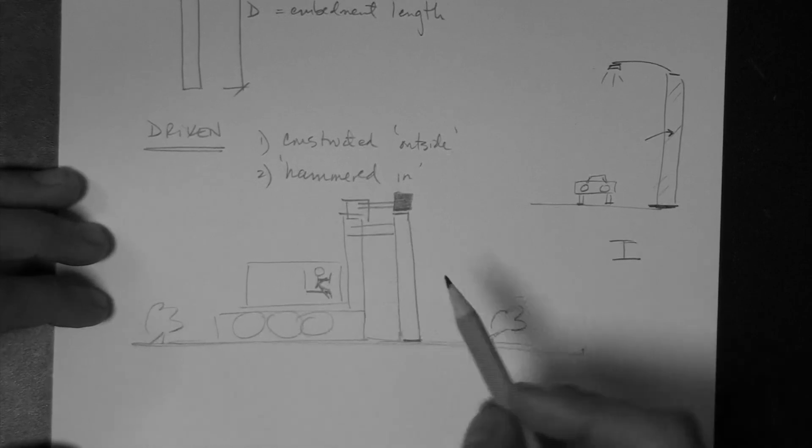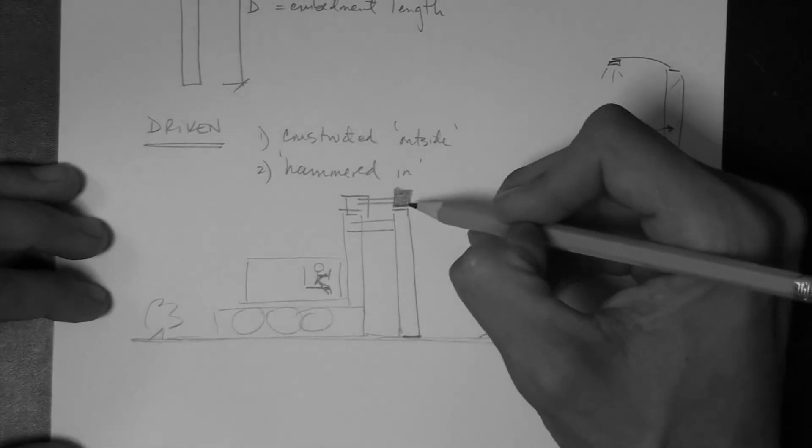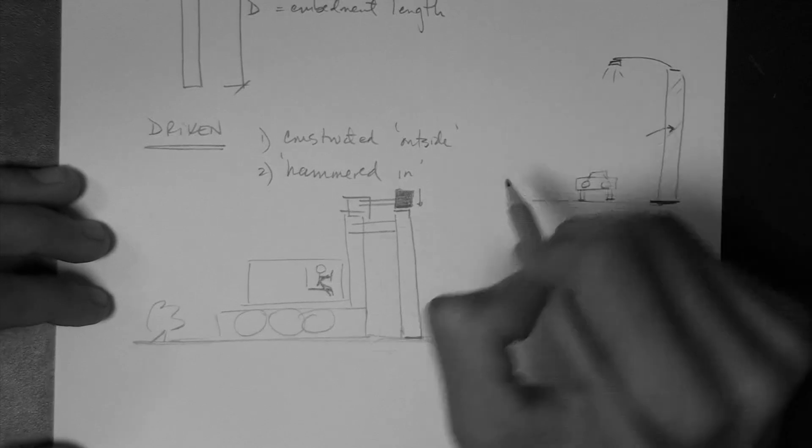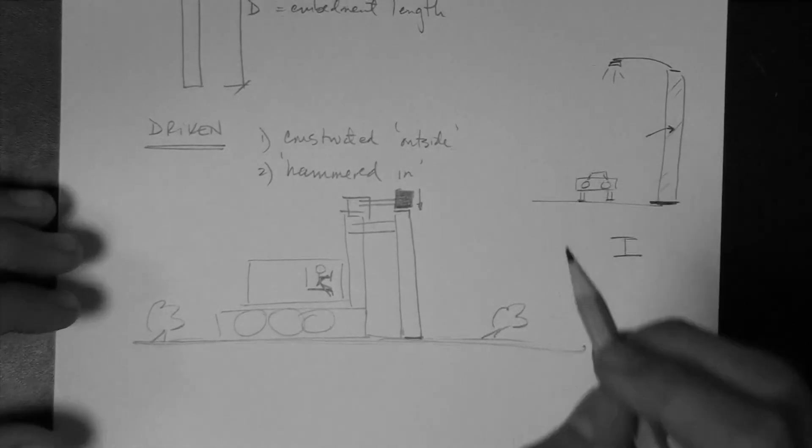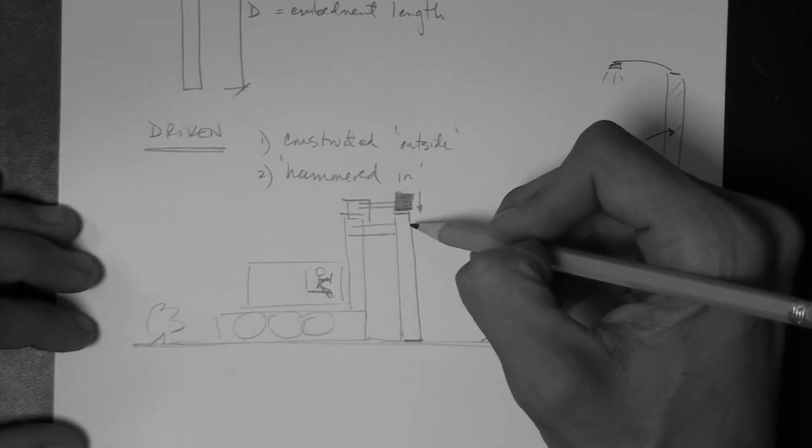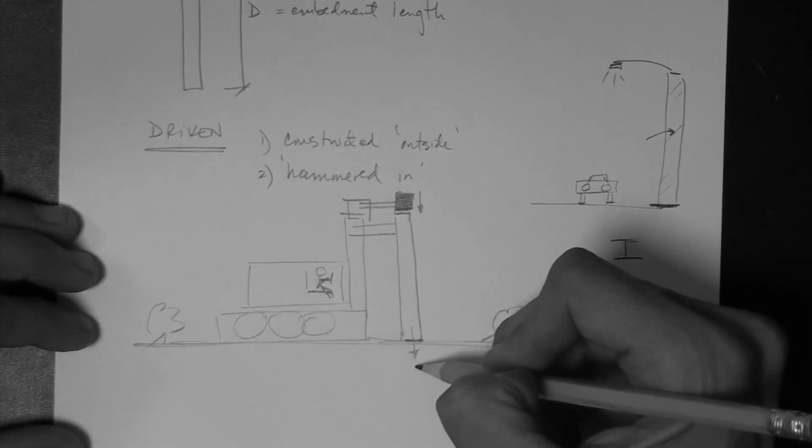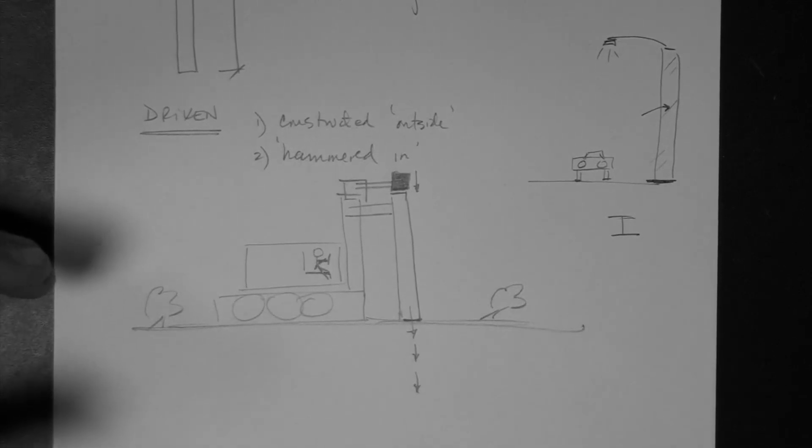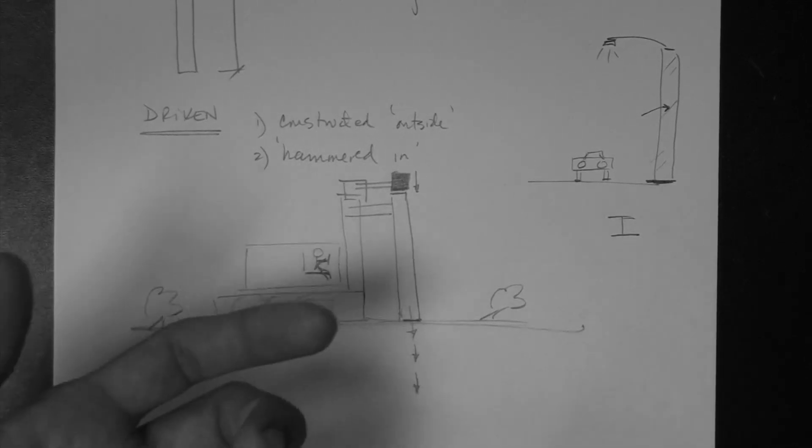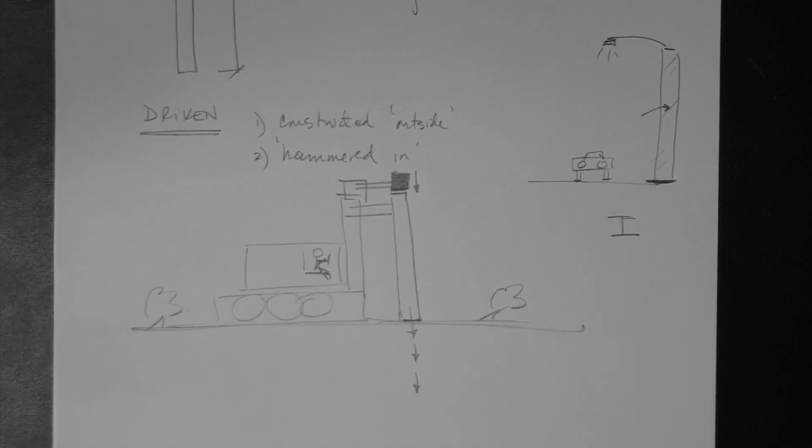But essentially, this machine holds the pile vertical, and then this hammer is raised and then released so that it actually hits the top of the pile, and the pile is literally hammered into the ground, just like a nail would if you hammer it with a wood hammer, a wood nail if you hammer it into a piece of wood, for example. Same thing.